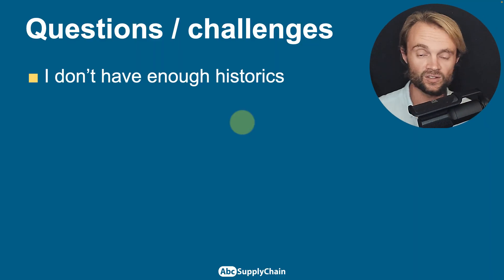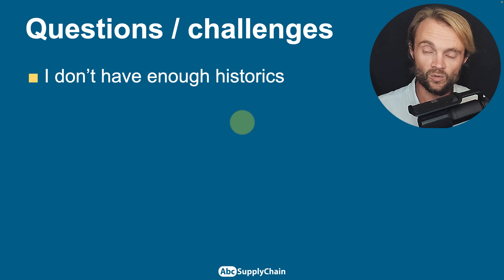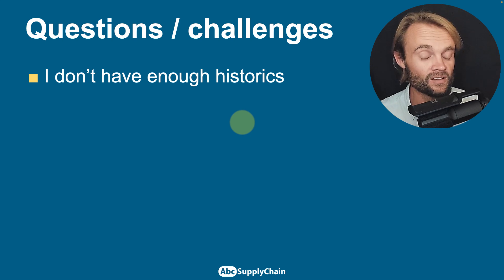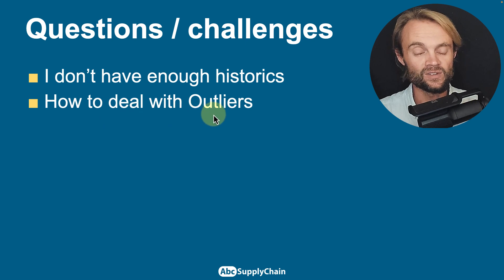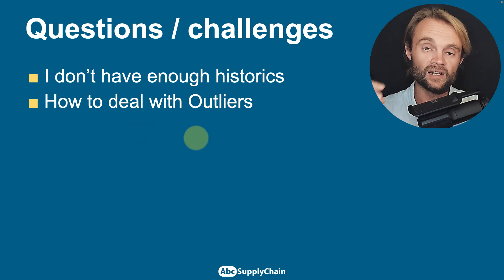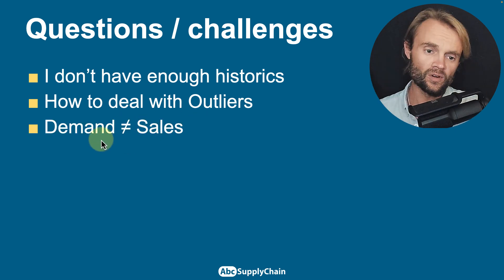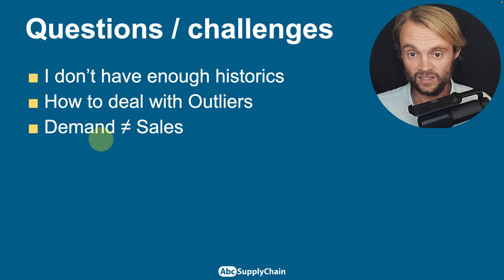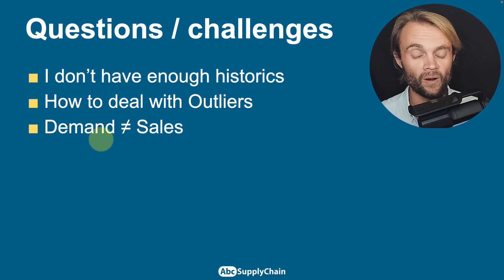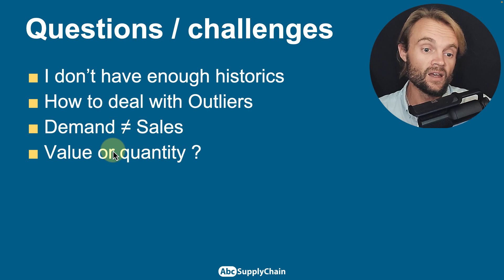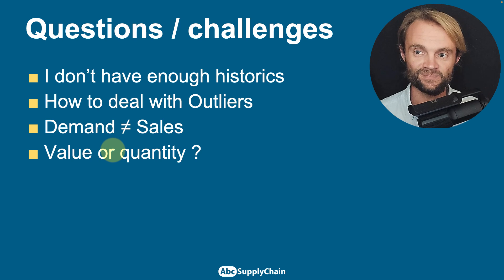The first challenge is not having enough sales history — the more you have, the better you can identify patterns. Do your best to find that data with your finance team. Also, how to deal with outliers — big unexpected peaks — you have to remove them. Be careful: demand is not equal to sales. It's better to create seasonality with your true demand. If you have three months out of stock, that's not the reality of your seasonality — you can correct the curve or remove the wrong period. Make sure you have something as close to true demand as possible. For value vs. quantity, I recommend value because we're selling quantity times price, though if you have a similar price range, quantity works too.